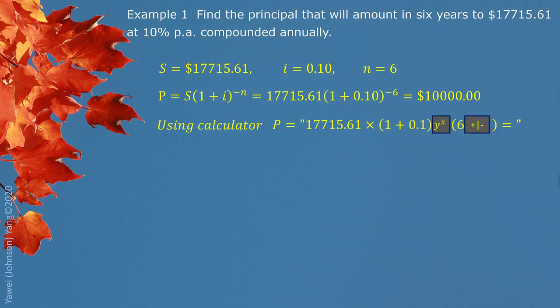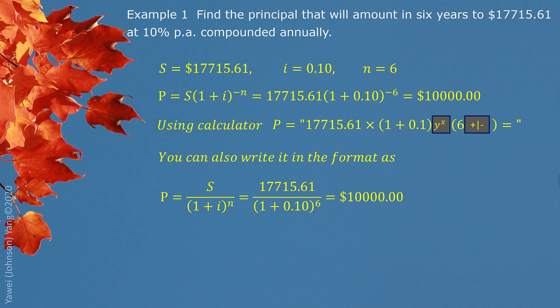If you use a calculator, here is exactly how you operate it. We have the exponent button y^x and the number sign button on your calculator. You can also write this in a different format as a division — in this case, you don't have a negative exponent, and you can operate this way from your calculator as well.